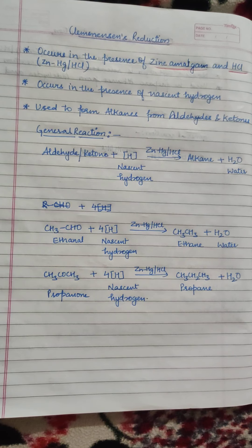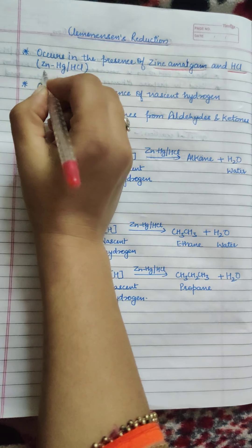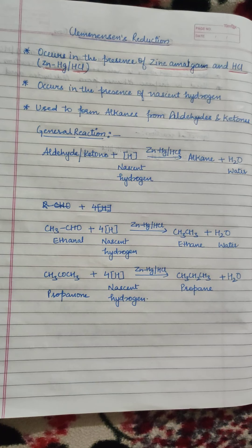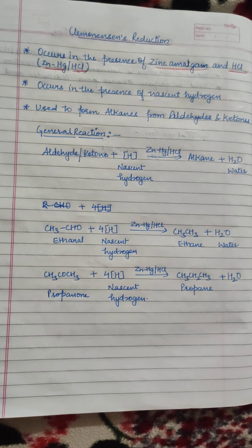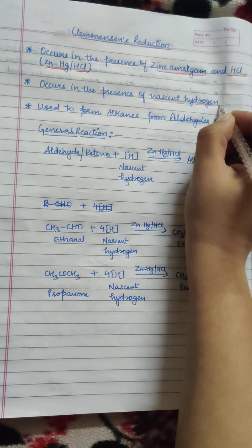You might be aware of what we mean by amalgam. Zinc amalgam is basically created with the help of mercury and zinc — that is why we use the symbol Zn/Hg — and HCl is used in the reaction. Secondly, if you focus on the reaction, it will always take place in the presence of nascent hydrogen.